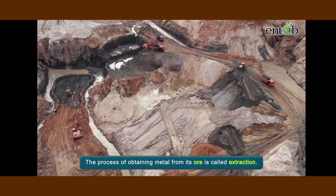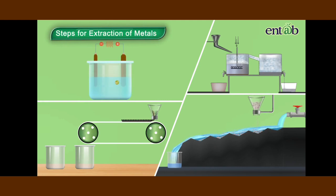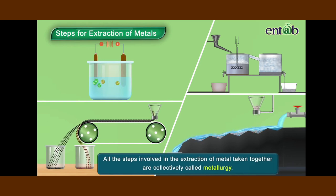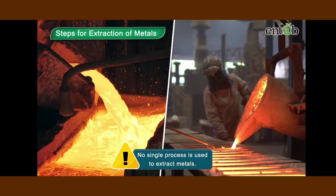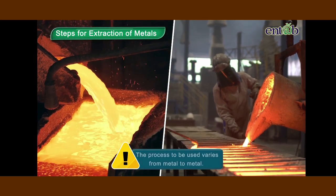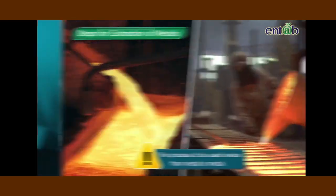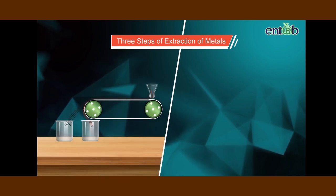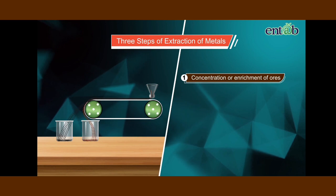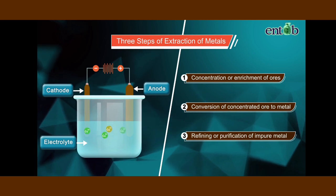The process of obtaining metal from its ore is called extraction. Various steps may be required to extract the metal from the ore in its pure form. These steps taken together are called metallurgy. Always remember that no single process is used to extract metals — the process to be used varies from metal to metal. The three main steps involved in the extraction of metals are: concentration or enrichment of ores, conversion of concentrated ore to metal, and refining or purification of impure metal.